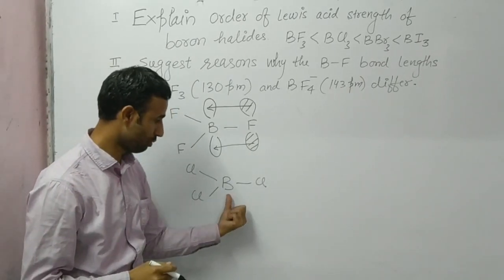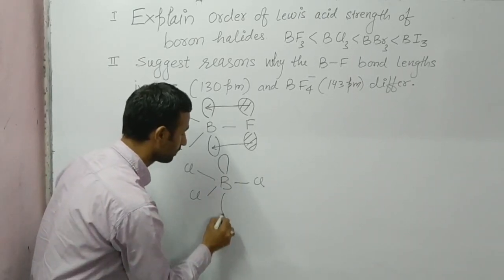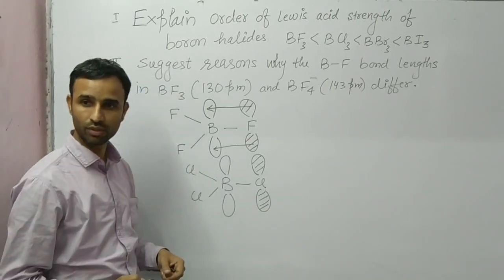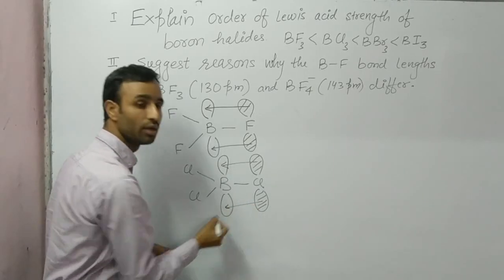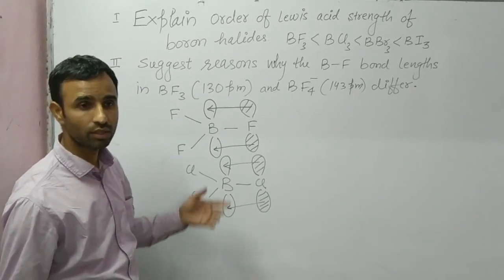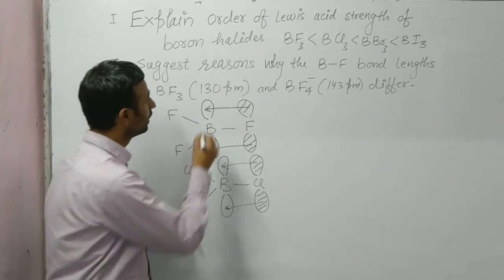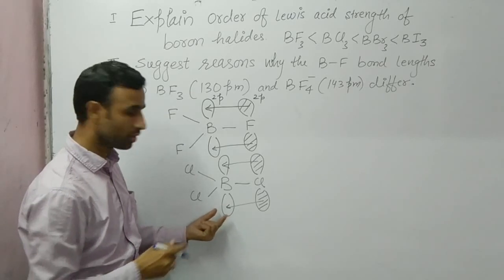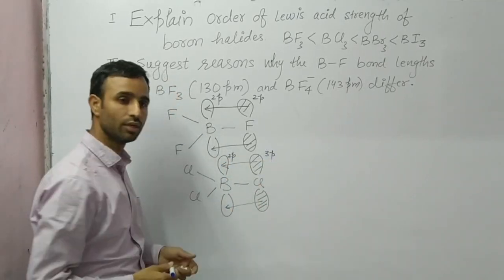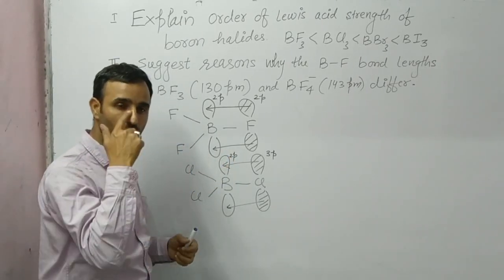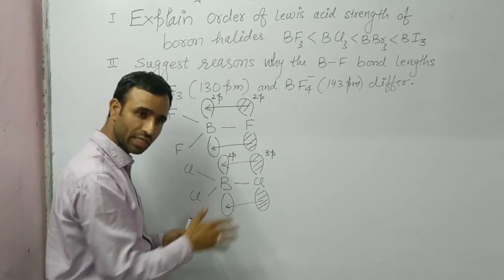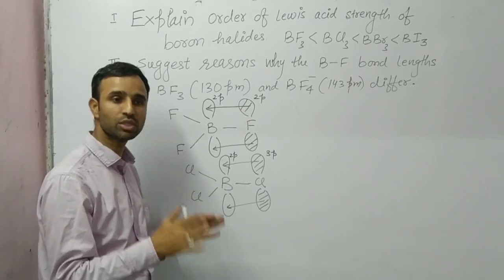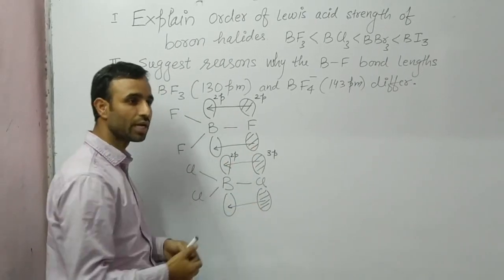The same is the case with the boron-chlorine bond: boron again has a vacant p-orbital, and chlorine has a filled p-orbital, so it also back-donates its electrons. But back-donation with fluorine is more effective. This is because in BF3 it is 2p–2p overlapping, whereas in BCl3 it is 2p–3p overlapping. On the basis of chemical bonding, overlapping is more effective when it occurs between orbitals of similar energy and same symmetry. Though symmetry is the same, the energy differs.